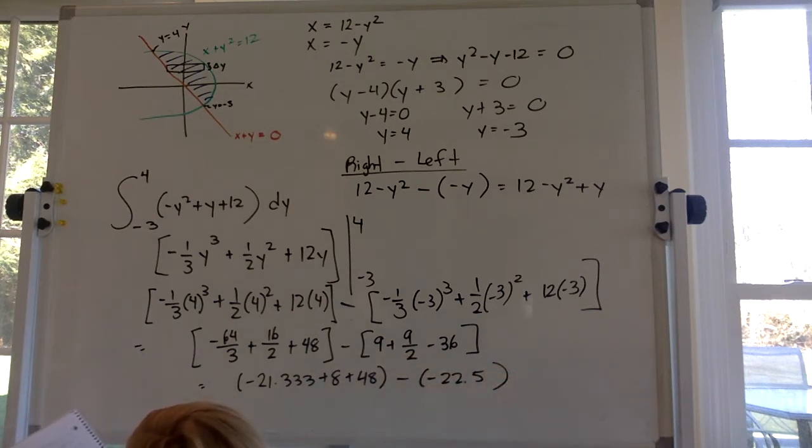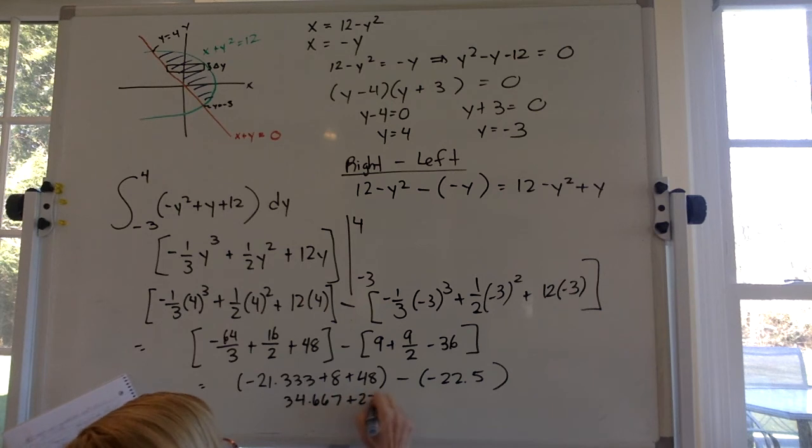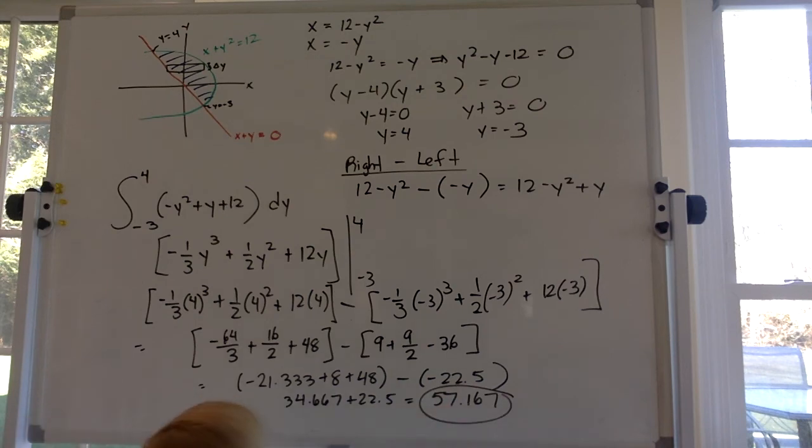And when I did all that, I ended up getting 34.667 plus 22.5. Wow, I got 57.167.